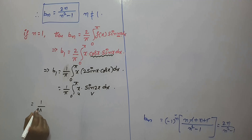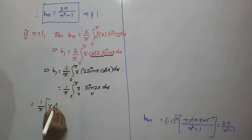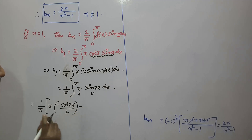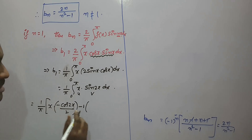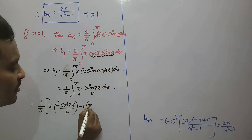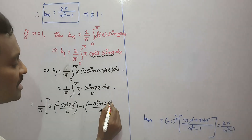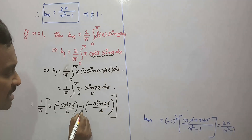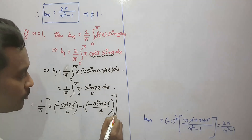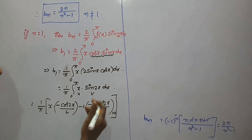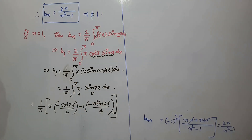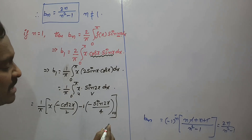Applying the uv rule: u = x, v = sin(2x). Then v₁ = −cos(2x)/2, and v₂ = −sin(2x)/4. The derivative of x is 1, and the derivative of 1 is 0, so integration by parts is completed. We get (1/π) · [x·(−cos(2x)/2) − 1·(−sin(2x)/4)] from 0 to π.